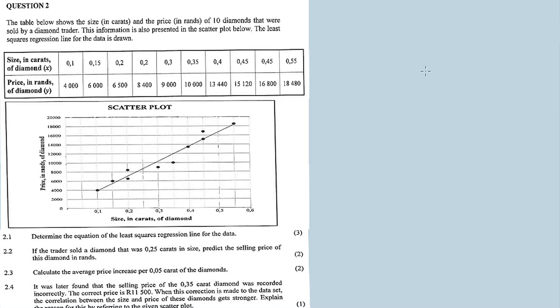Alright, question 2.1: Determine the equation of the least squares regression line for the data. So the size in carats of diamond is x, and then the price in rents of diamond is y.